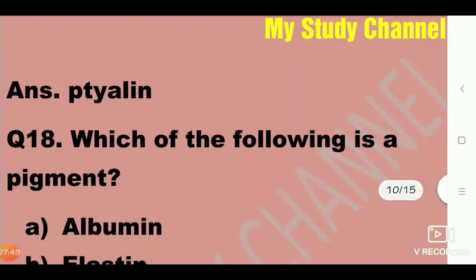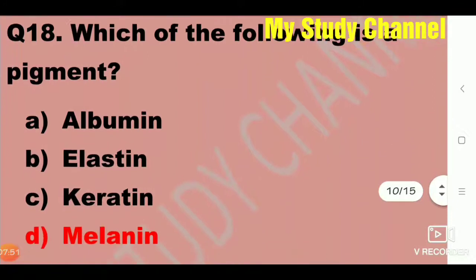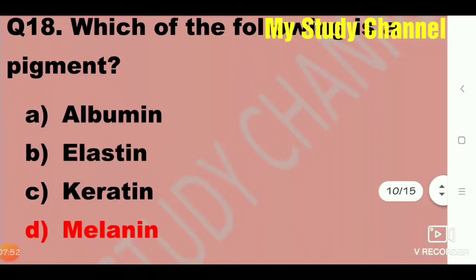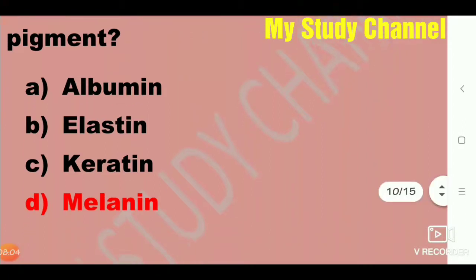Next question: Which of the following is a pigment? Option A is albumin, B is elastin, C is keratin, and D is melanin. Option D is the right answer — melanin is a pigment.